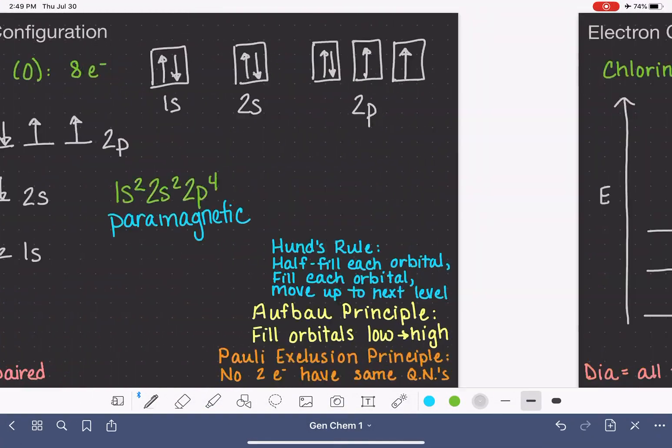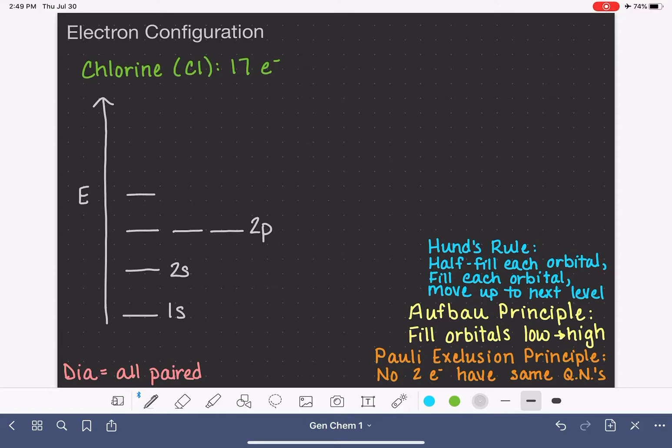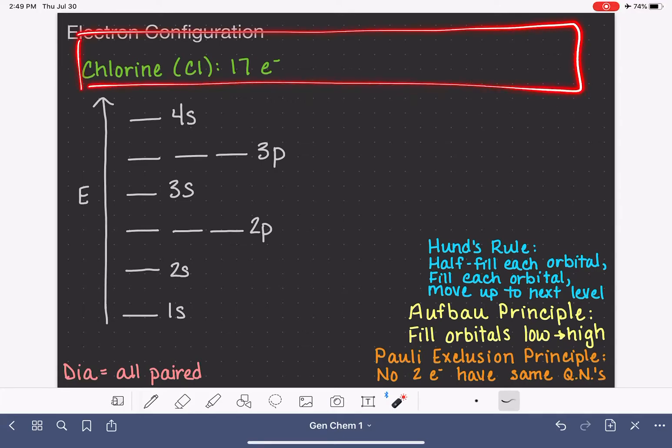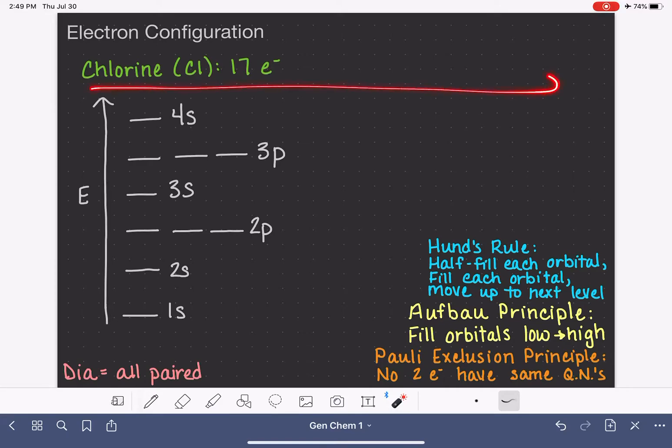We're going to go back and put in 3s and 3p and 4s. In this video, I'm not going to use a box diagram. I've done that in previous videos. I'm just going to stick with the energy diagram, and we're just going to jump right in and start filling this up with 17 electrons. Remember, we start at the bottom and work our way up.